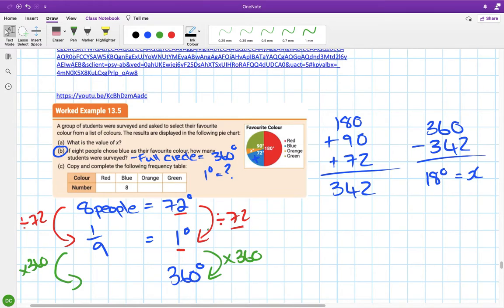If I take one-ninth and multiply it by 360, I get 40 people. 40 people were surveyed.